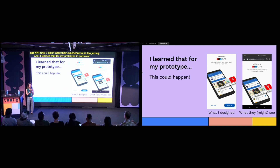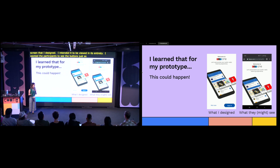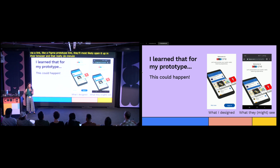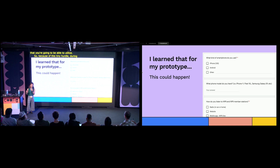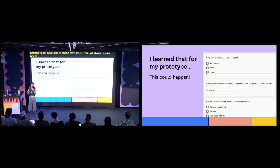I learned something important for my particular prototype. On the left is the screen I designed — I intended it to be viewed in its entirety, and I wanted participants to see the buttons as soon as they opened the prototype. But whenever you're sending a prototype via a Figma link, they'll most likely open it in their browser, which really diminishes the vertical space you can utilize. So because of this hurdle, during my screener questions I decided to ask what kind of phone participants have. This allowed me to prioritize users with a more modern phone so that screen proportions would be a little longer and I wouldn't encounter that problem.